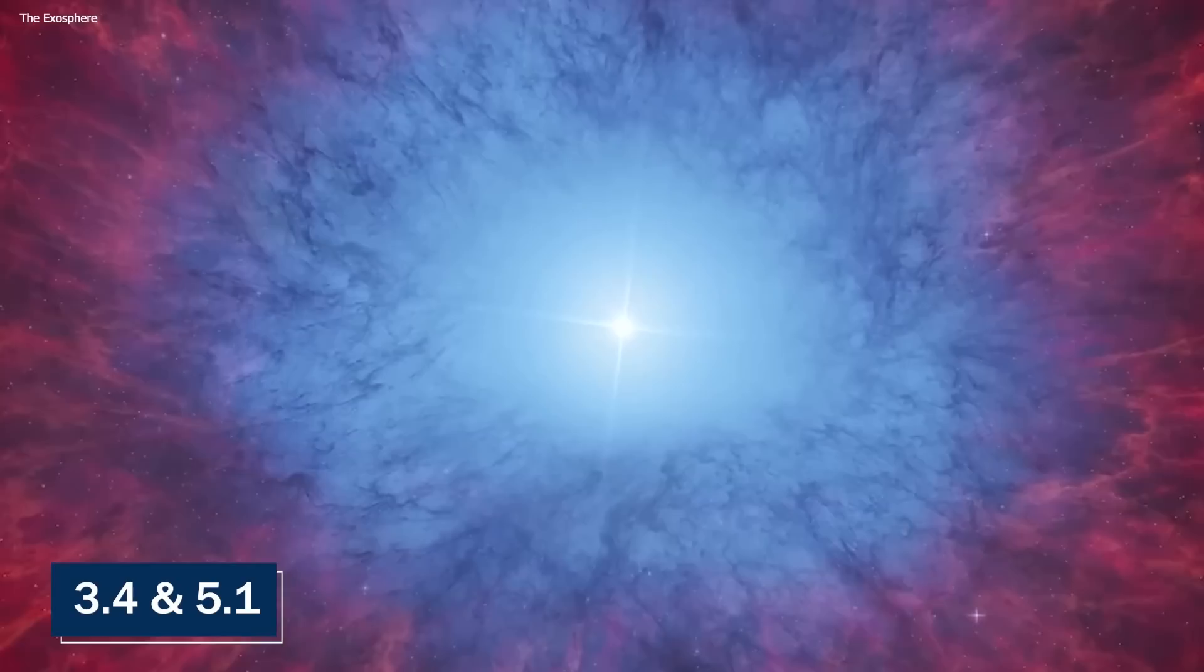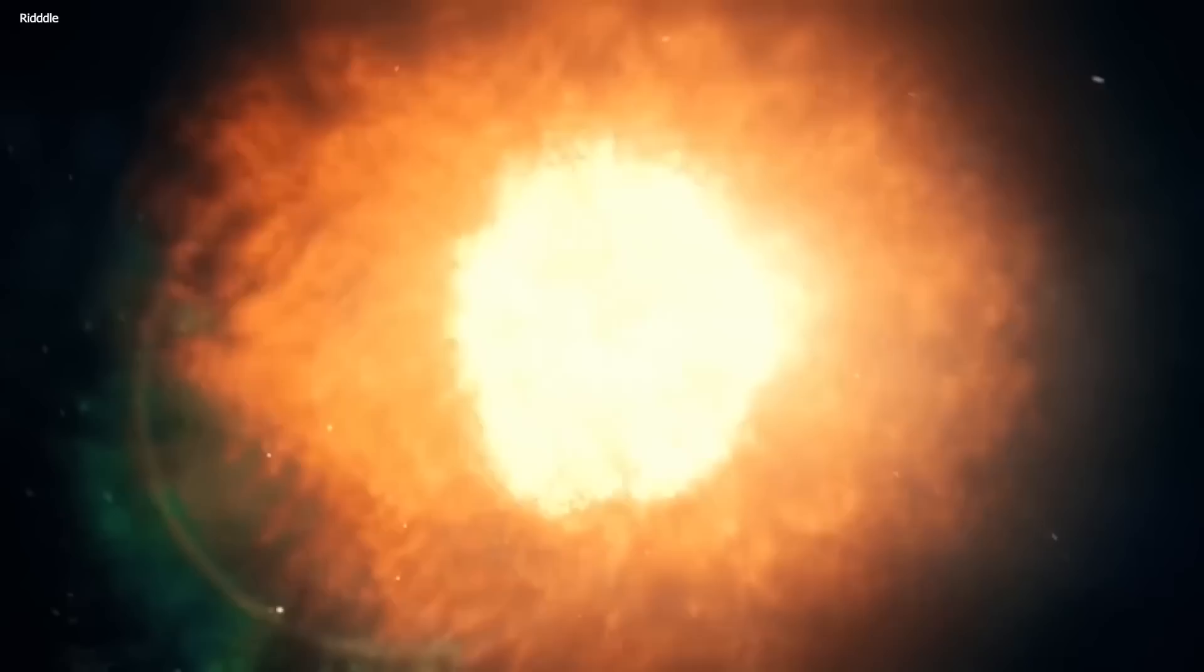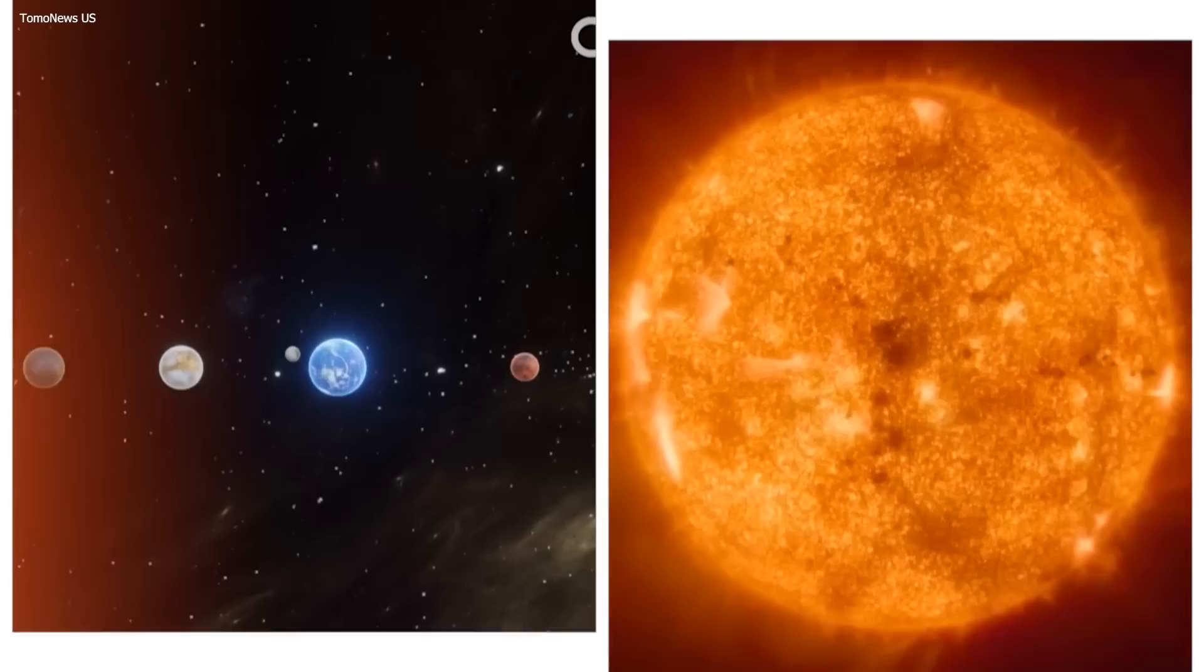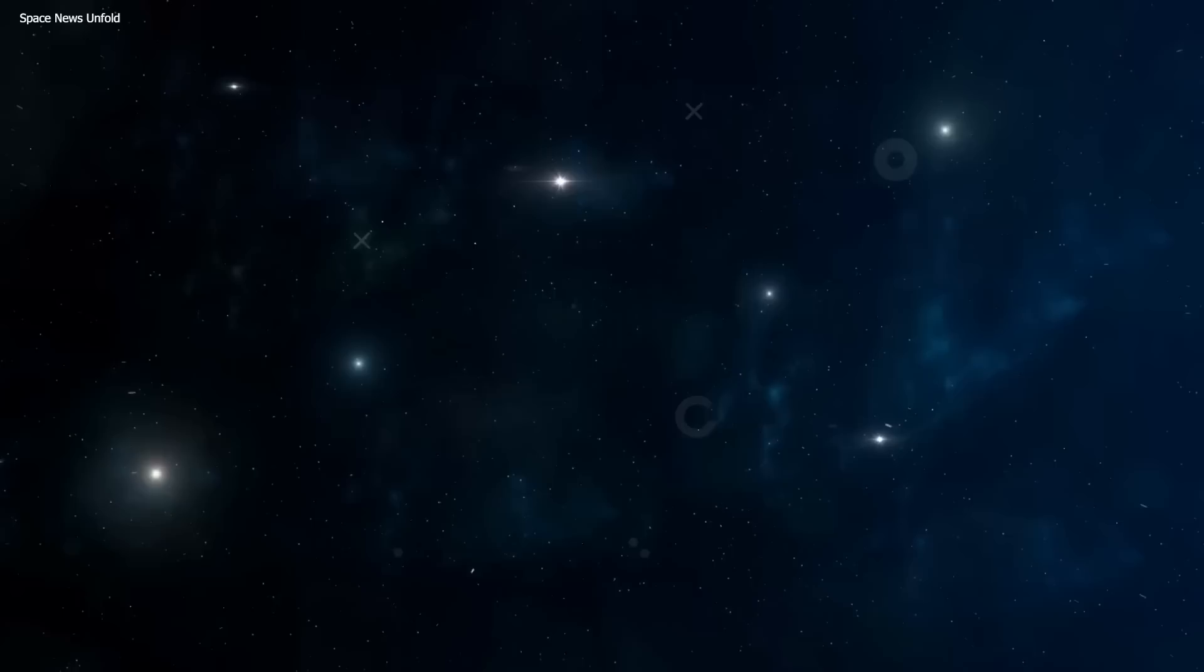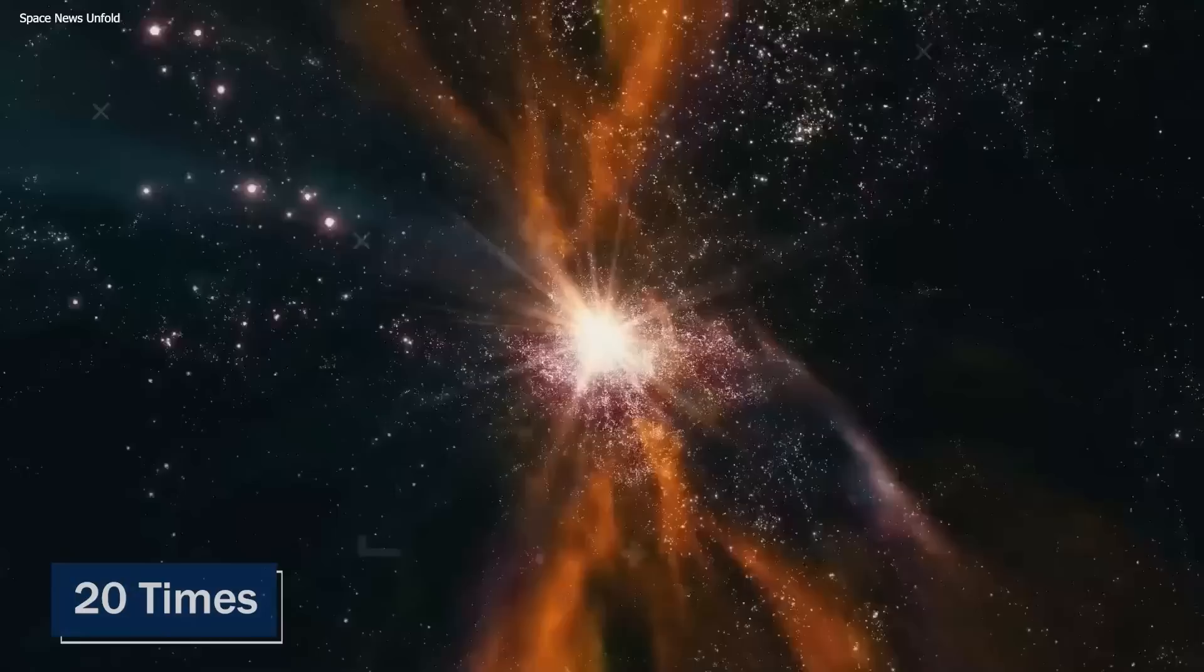The stars also differ in their mass. Betelgeuse is estimated to have a mass of about 11 times that of the sun, while Antares is thought to have a mass of about 12 times that of the sun, making them around the same size and brightness. Mu Kefi, however, is much more massive, with a mass estimated to be around 20 times that of the sun. Finally, each star has its own unique set of properties and behavior.